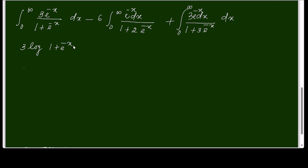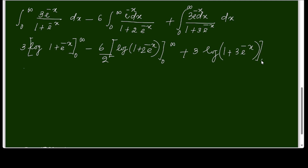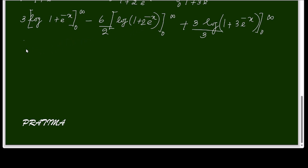Integrating each term: the first gives 3 log(1 + e^(-x)), the second gives -6 log(1 + 2e^(-x)) / 2, and the third gives 3 log(1 + 3e^(-x)) / 3, all evaluated from 0 to infinity. Applying limits: at infinity the exponential terms go to 0, at 0 they give log 2, log 3, and log 4 respectively.